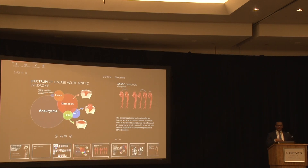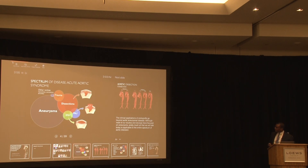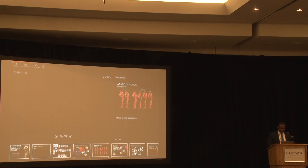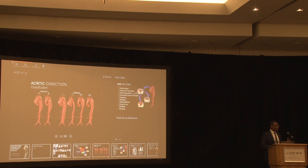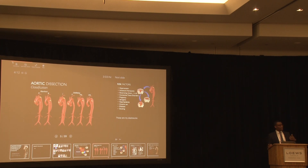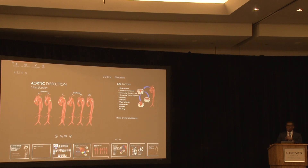I initially made this talk for physicians, but found out yesterday that 90% of the audience is non-physician, so I made some adjustments — I hope it's not too basic. When looking at aortic dissection classification, there are two systems. Dr. DeBakey classified types 1, 2, and 3. For the purpose of this talk, let's focus on the Stanford classification, which simplifies things.